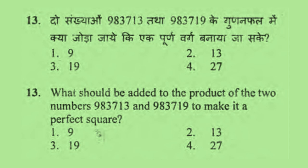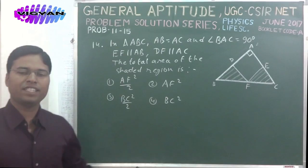What should be added to the product of 983,713 and 983,719 to make it a perfect square? Option 1: 9, Option 2: 13, Option 3: 19, Option 4: 27.